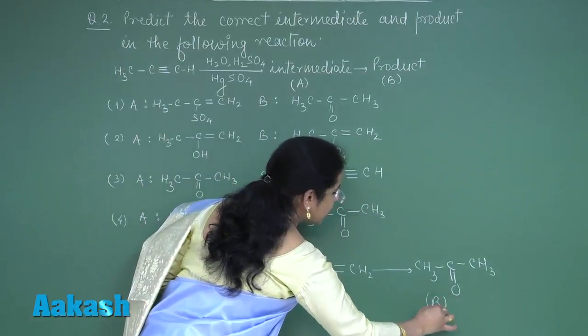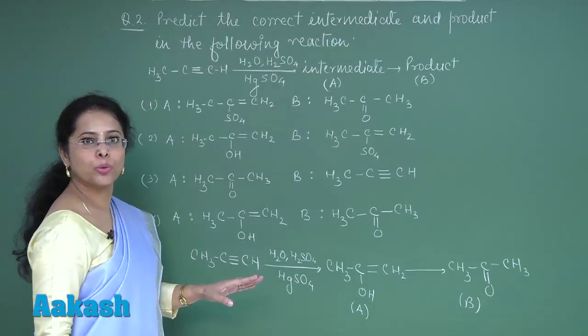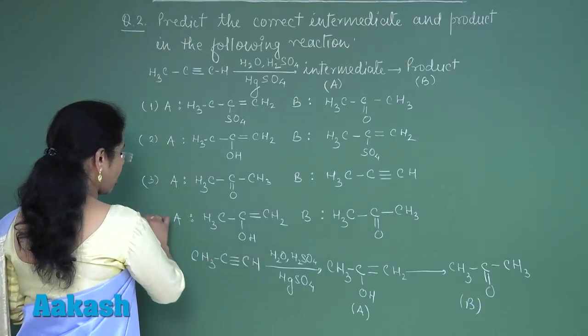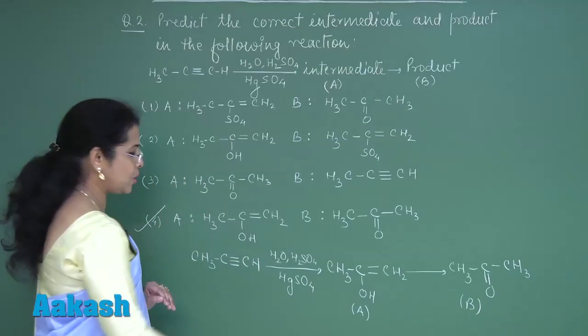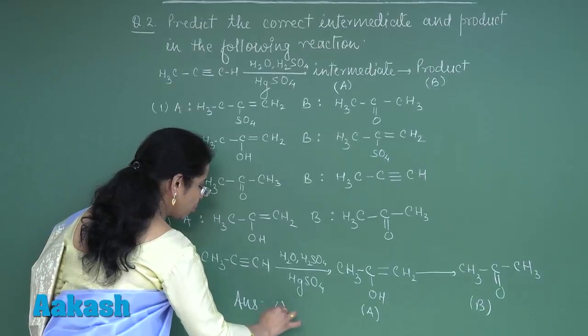And the final product of reaction which is mentioned as B should be a ketone. So in the four options given here, the fourth option is the correct option. So answer of this question should be fourth option.